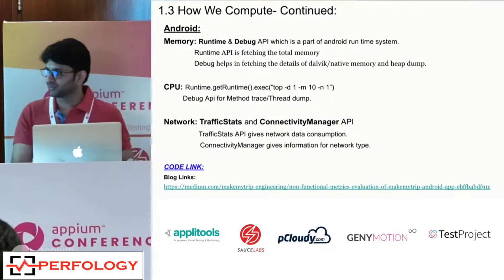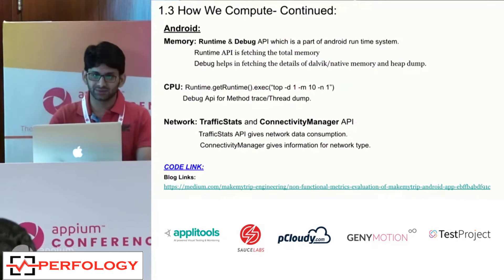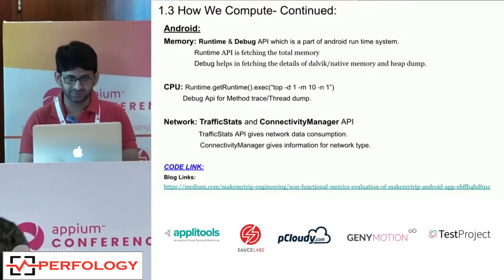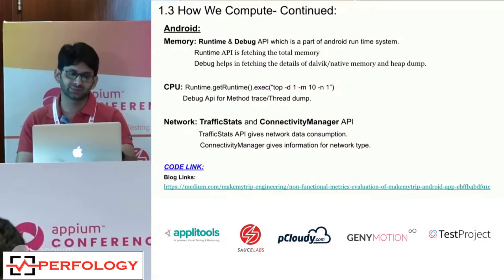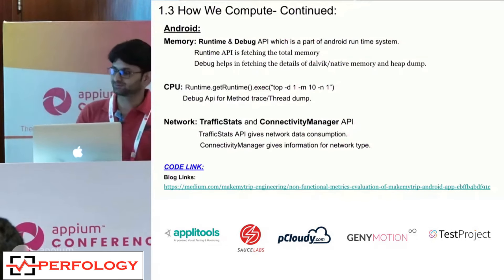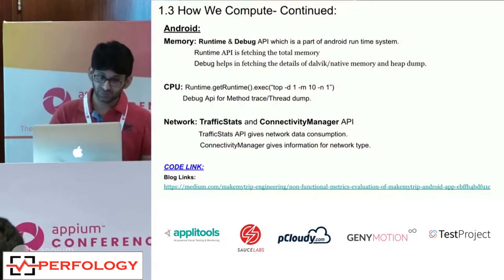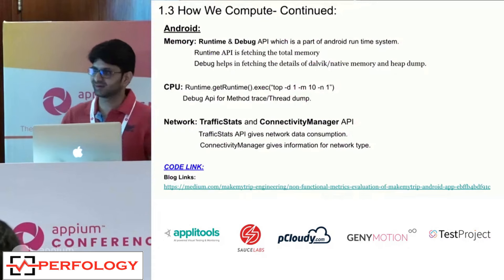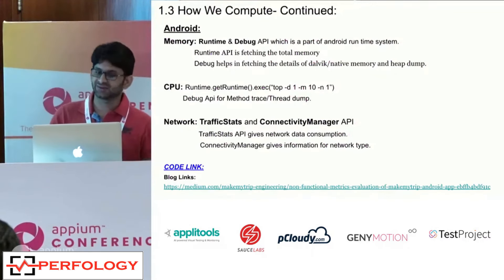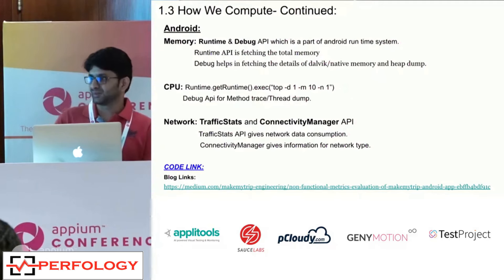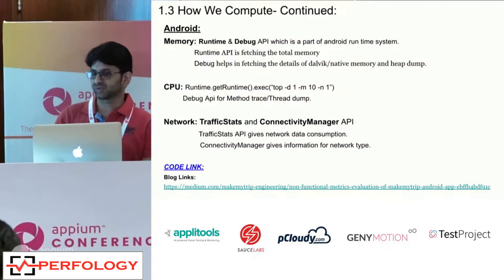For computing memory, we use Google-provided external libraries for Android. We have a runtime API for fetching runtime memory and a debug API for finding Dalvik and native memory size at particular points in time. We can also capture heap dumps using the debug API. Heap dumps are helpful when a memory-related issue is found — if a test case fails, we automatically capture a heap dump, save it to device storage, and then manually analyze it to identify memory segregation at the package level.